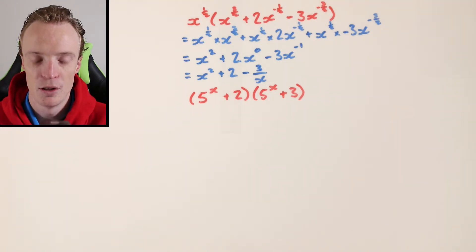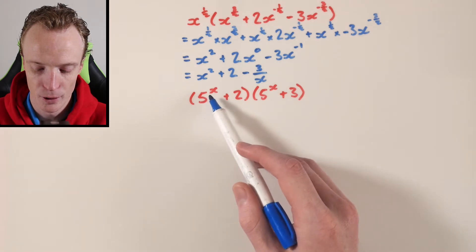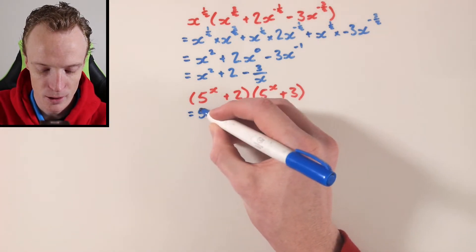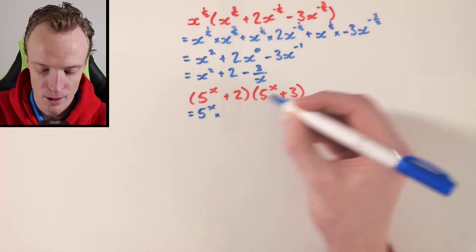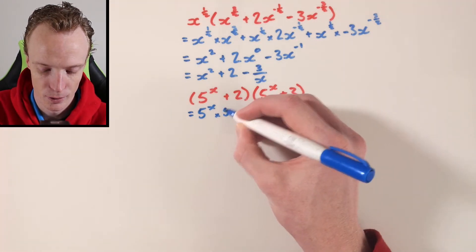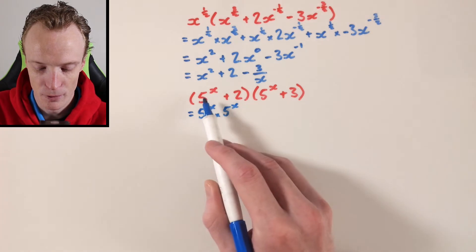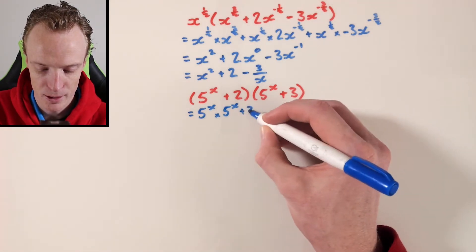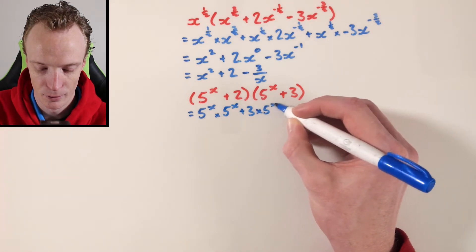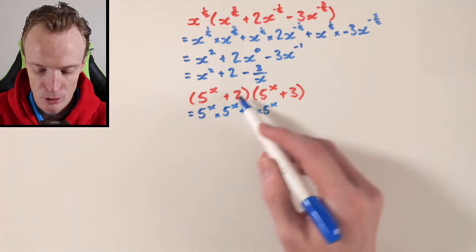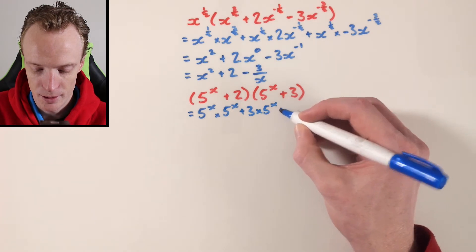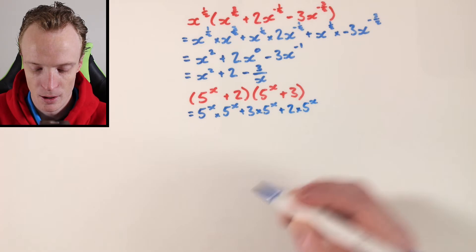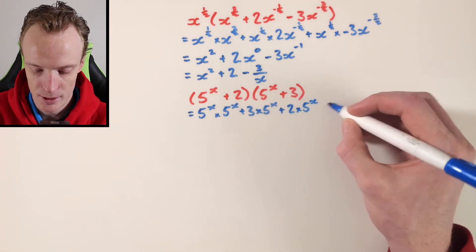Essentially, we need to multiply 5 to the power of x first with everything in the second bracket. So this will be 5 to the power of x multiplied by 5 to the power of x first. Then it'll be 5 to the power of x multiplied by 3, which I'll write as plus 3 times 5 to the power of x. Then it's going to be plus 2 times 5 to the power of x. And then 2 times 3, which is 6.